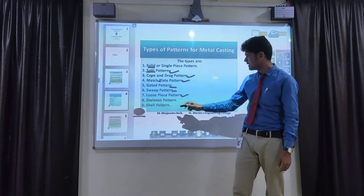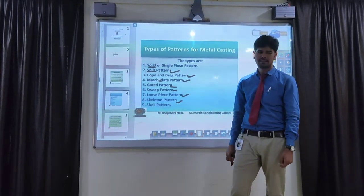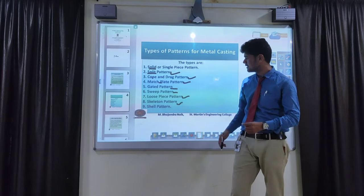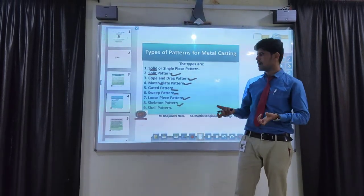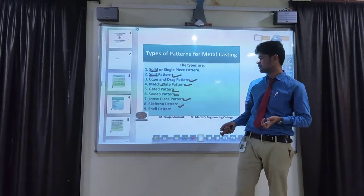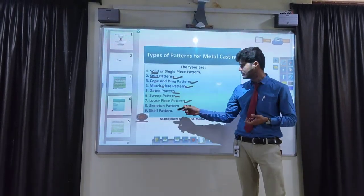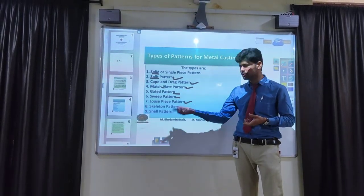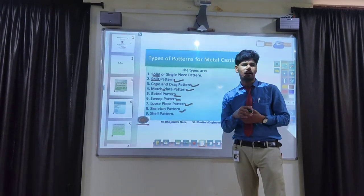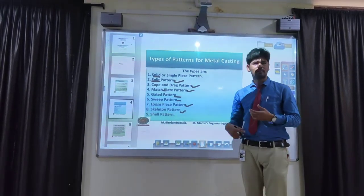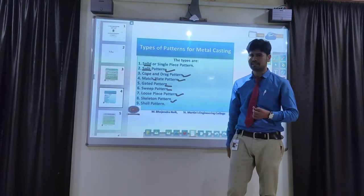The next type is called a skeleton pattern. The skeleton pattern is used when an object has some hollow material. Sometimes you can use core material, but here without using any core, we can prepare it as a hollow material using special kinds of sand in the skeleton pattern.